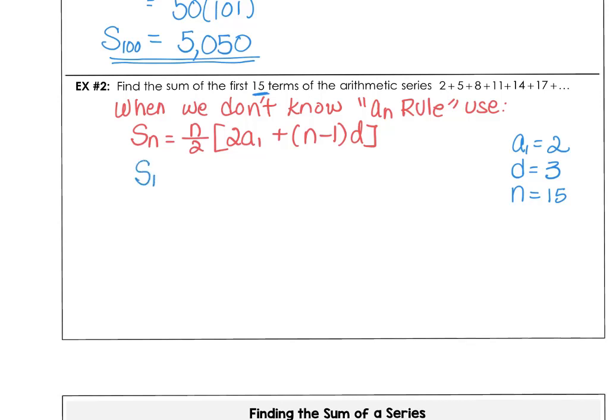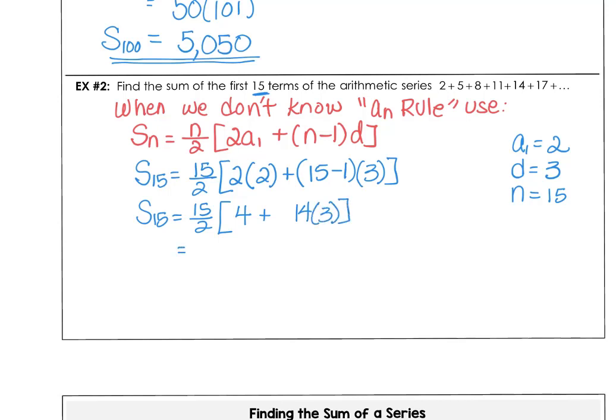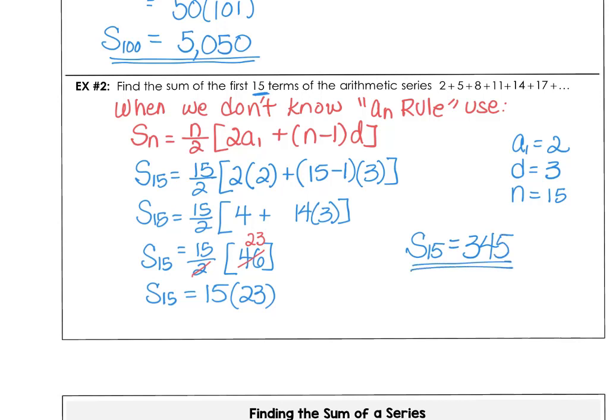So we want to find the 15th term using 15 over 2 and 2 times the first term, plus 15 minus 1 times our difference, which was 3. So the 15th term summed up would be 15 over 2 and we're going to multiply 4 plus 14 times 3. 14 times 3 is 42, and 42 plus 4 is 46. If we say 2 divides 46 23 times, then 15 times 23, you can do that with your calculator. 15 times 23 is 345, the sum of the arithmetic series.